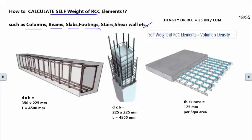Now, for calculating self weight of any RCC element, we should know two values. One is volume of the RCC element, the other one is density of RCC. It is to be remembered that density of RCC is 25 kilo Newton per cubic meter.